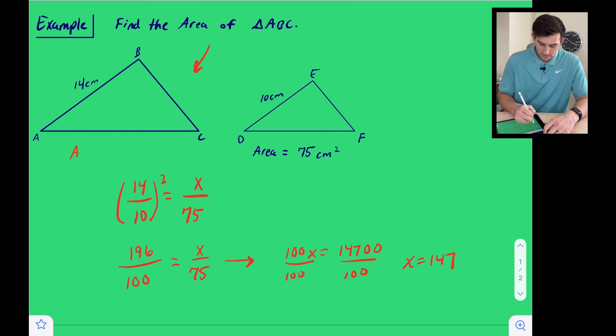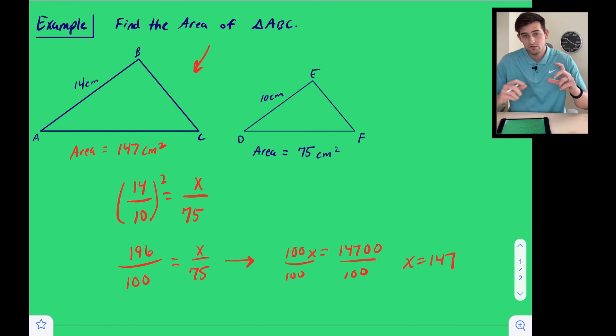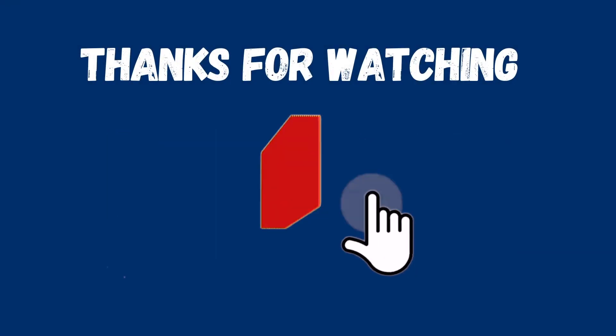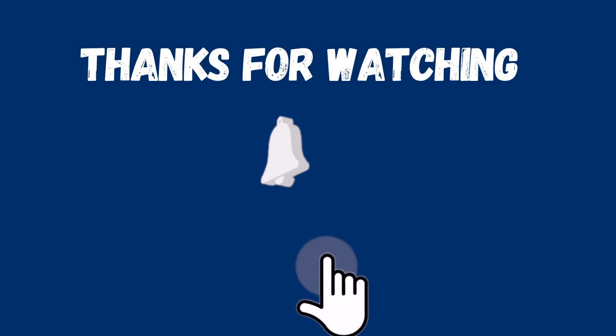And we can add that to now say the area of our larger triangle would be 147 square centimeters. Okay. So that's how the areas of similar polygons are related. Their areas, the ratio of their areas is equal to the square of the corresponding side lengths.